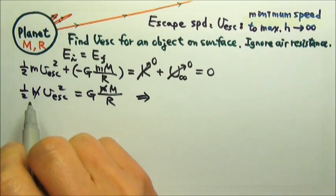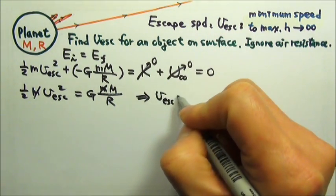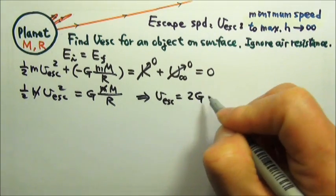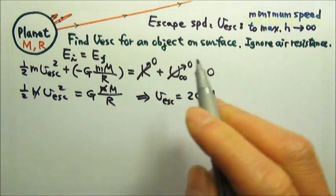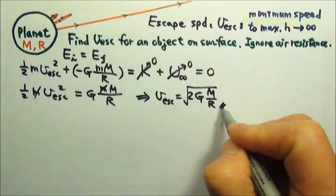And then take the square root. So that's the escape speed.